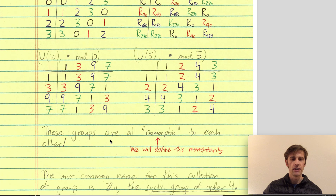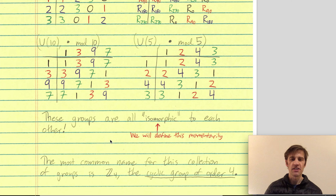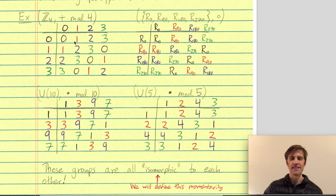These above groups are all isomorphic to each other, even though we haven't yet defined what an isomorphism is. The most common name for this collection of groups is Z mod 4, the cyclic group of order 4. So if you find a group that has this structure, you'll say: this group is the same as Z mod 4. This is our canonical name for all groups isomorphic to these.